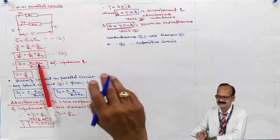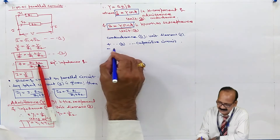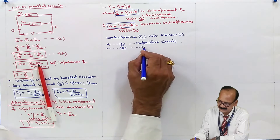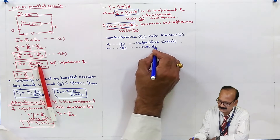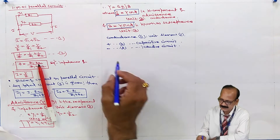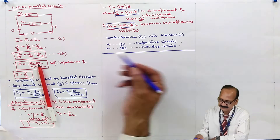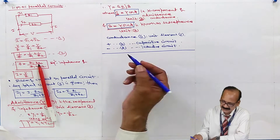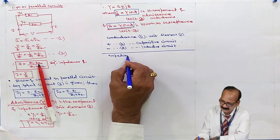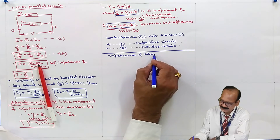Susceptance is positive for the capacitive circuit and negative for the inductive circuit. Now let us study the impedance triangle and admittance triangle.